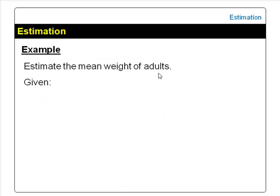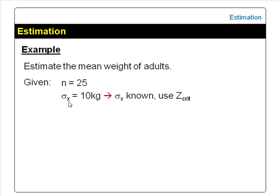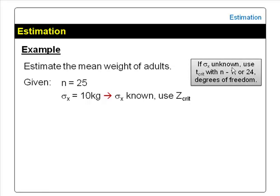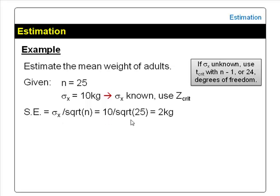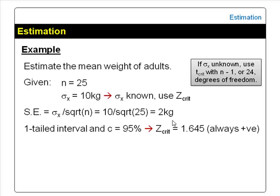For example, given sample size n = 25 and population standard deviation = 10 kg. Since the population standard deviation is known, we will use Z-critical as the critical value instead of T-critical. However, if the population standard deviation were unknown, we would use T-critical with n − 1, or 24, degrees of freedom. The standard error is 10 kg divided by the square root of 25, giving a standard error of 2 kg.